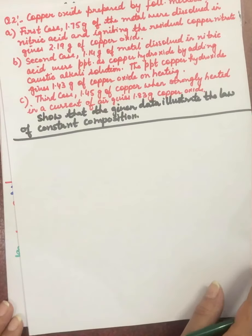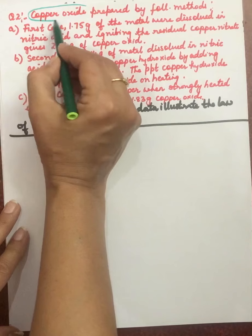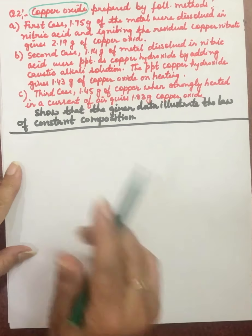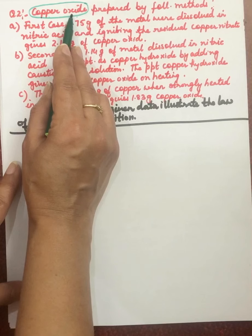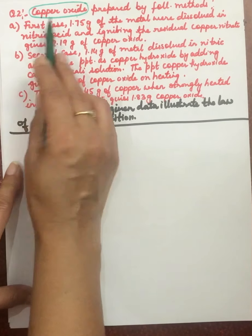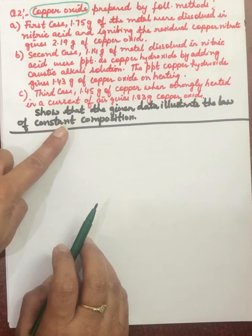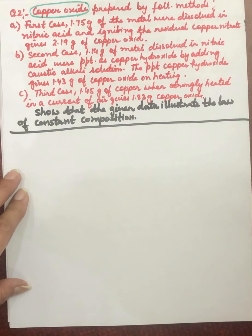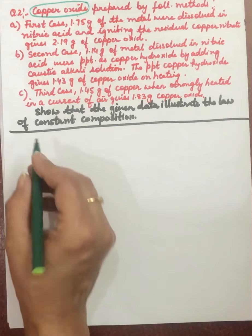Now one more numerical for the law of constant composition. Here we are preparing copper oxide, but by three different methods. By any method we prepare copper oxide, there will be copper and oxygen, and the ratio of these elements by mass should be the same. We have to check all three methods to see if we get the same percentage of copper and oxygen.